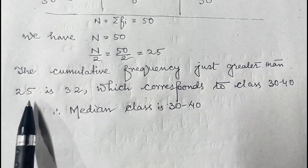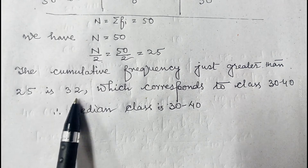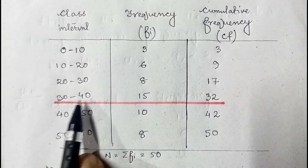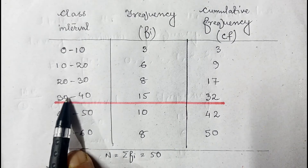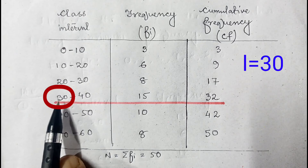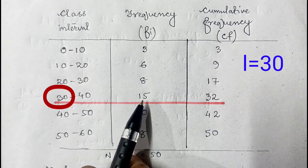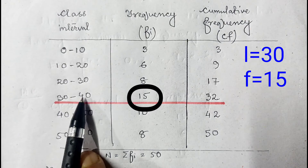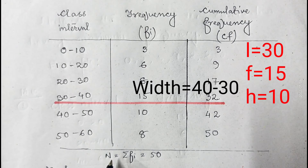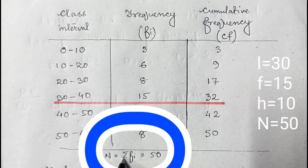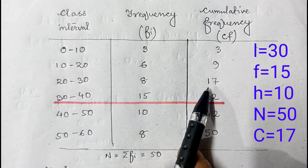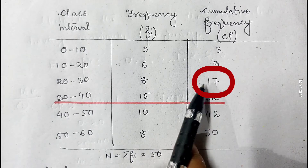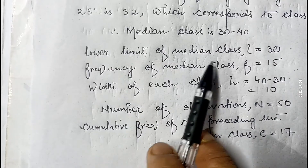The cumulative frequency just greater than 25 is 32, which corresponds to 30 to 40; therefore the median class is 30 to 40. Since 30 to 40 is the median class, the lower limit l is 30. The frequency of the median class is 15, so f is 15. The width of the class h is 10 (since 40 minus 30 is 10). The cumulative frequency of the preceding class is 17, so c is 17.